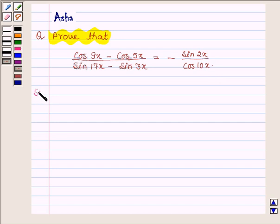Let us now begin with the solution. The left hand side is equal to cos 9x minus cos 5x upon sin 17x minus sin 3x.